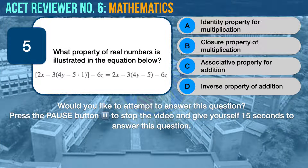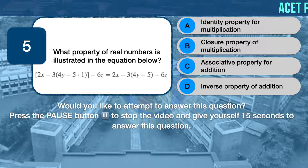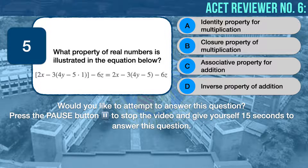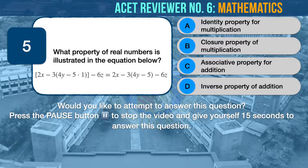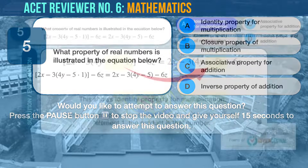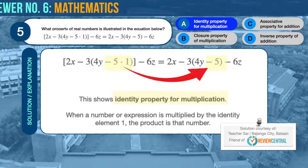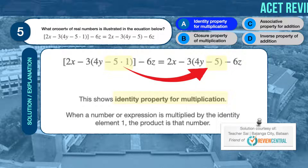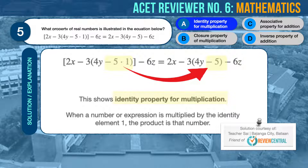Math question number 5. What property of real numbers is illustrated in the equation below? A, identity property for multiplication; B, closure property of multiplication; C, associated property for addition; D, inverse property of addition. The correct answer is A. The given equation shows the identity property for multiplication, which states that when a number or expression is multiplied by the identity element 1, the product is that number.